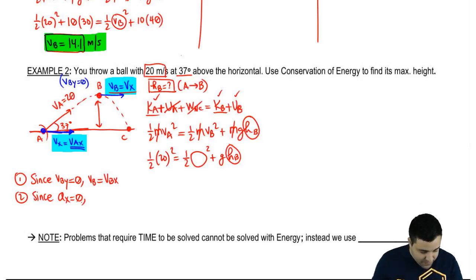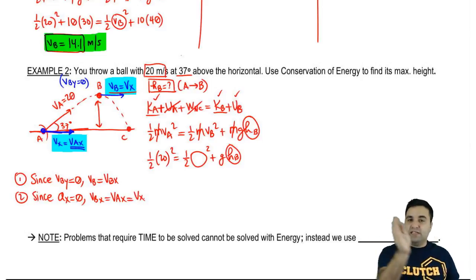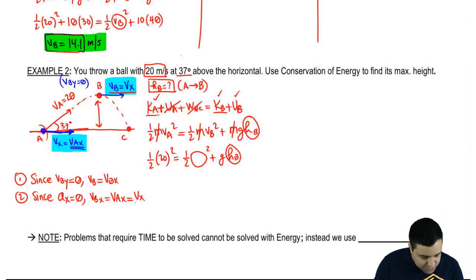Then I can say that VBX is the same as VAX, because it never changes. In fact, it doesn't change, so I like to think of it as not VAX, VBX, VCX, but just VX to make a point, to reinforce the point that VX is always the same. So, if I want to find VB, I just have to find VBX, and if I want to find VBX, I just have to find VAX. And we can do that.